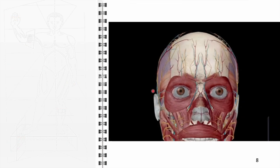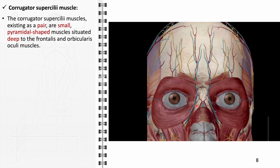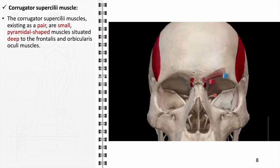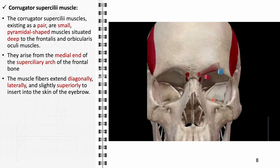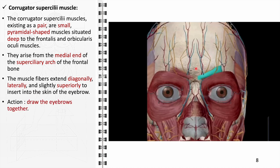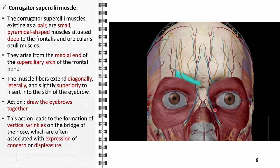The corrugator superciliae muscles, also components of the orbital group, exist as a pair of small, pyramidal-shaped muscles located deep to the frontalis and orbicularis oculi. Originating from the medial end of the superciliary arch of the frontal bone, their fibers extend diagonally, laterally, and slightly superiorly to insert into the skin of the eyebrow. Their primary function is to draw the eyebrows together, creating vertical wrinkles on the bridge of the nose associated with concern or displeasure. They are innervated by the temporal branches of the facial nerve and receive blood supply from the ophthalmic artery.